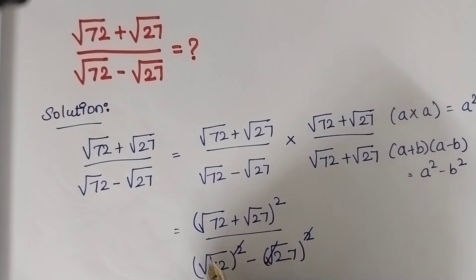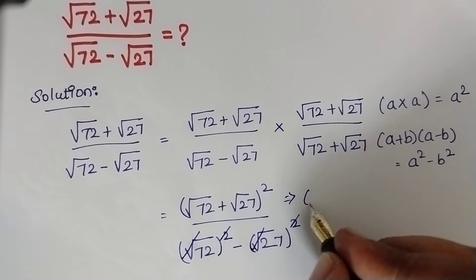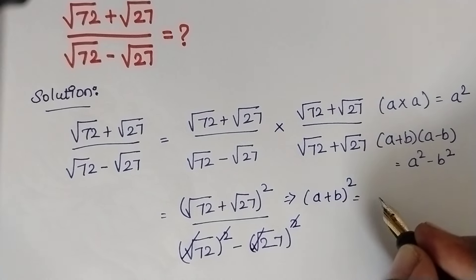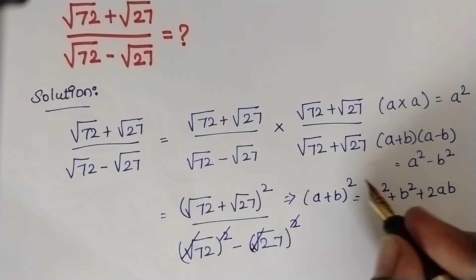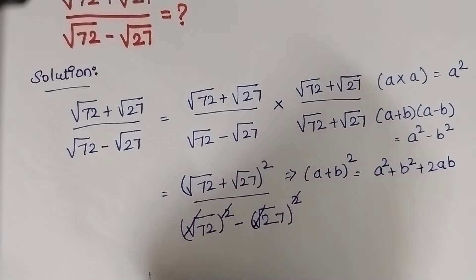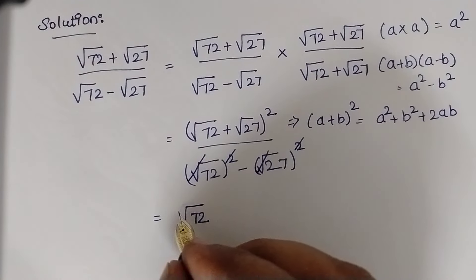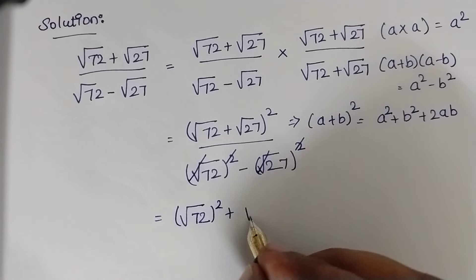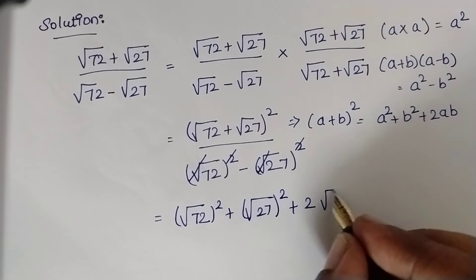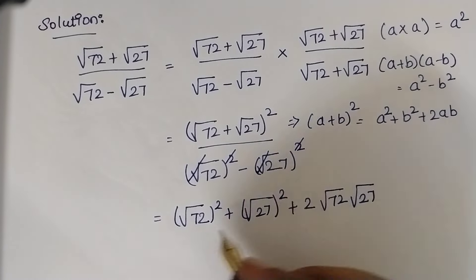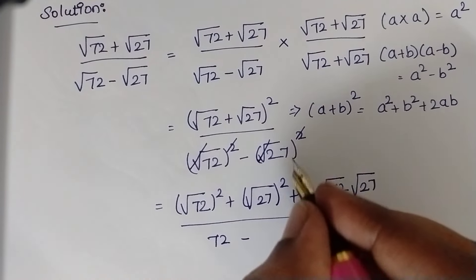Therefore this square and root get cancelled in the denominator. If you see the numerator, this is in the form of (A + B)² which is equal to A² + B² + 2AB. So just apply that formula here: this becomes (√72)² + (√27)² + 2 × √72 × √27, divided by 72 − 27.